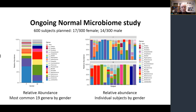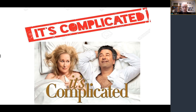We've initiated an ongoing normal microbiome study with 600 subjects planned. This is the initial analysis with 17 female and 14 male subjects. We can see 19 genera by gender — the relative abundance on the left, and the relative abundance of the individual subjects by gender. It is going to be very complicated, the normal microbiome, but it's essential that we understand this before we know how to interpret the microbiome in the urinary tract of patients with urologic disease.